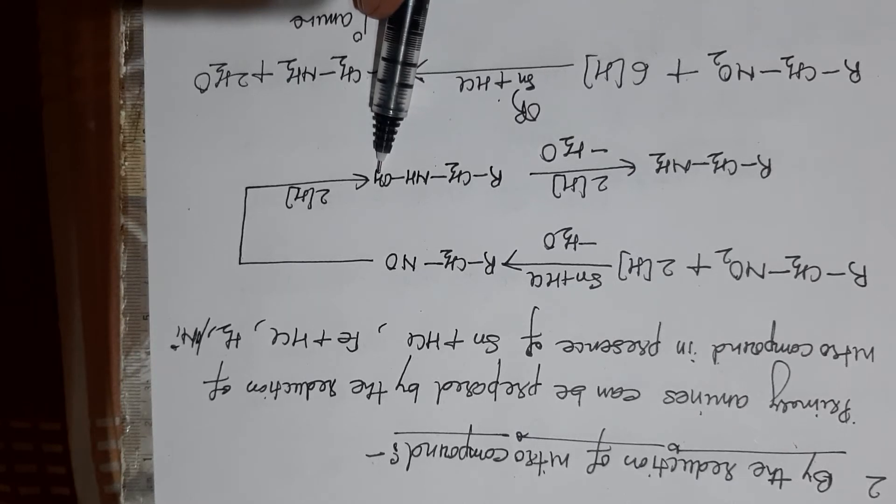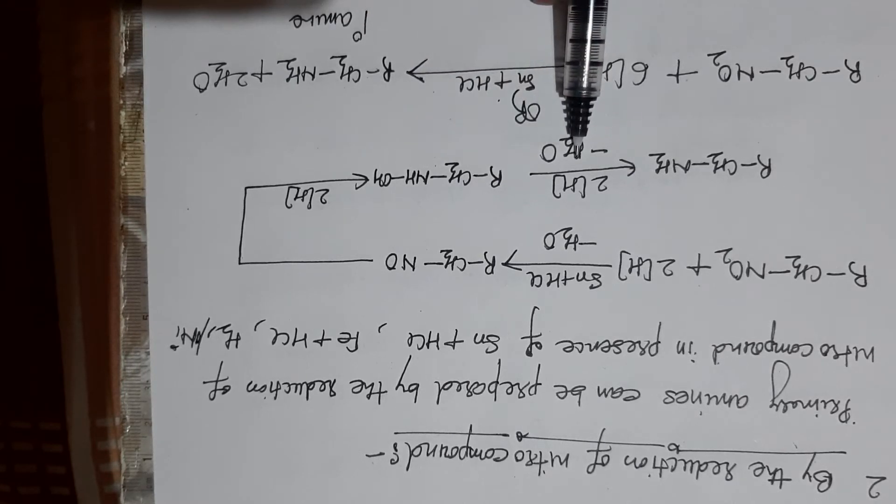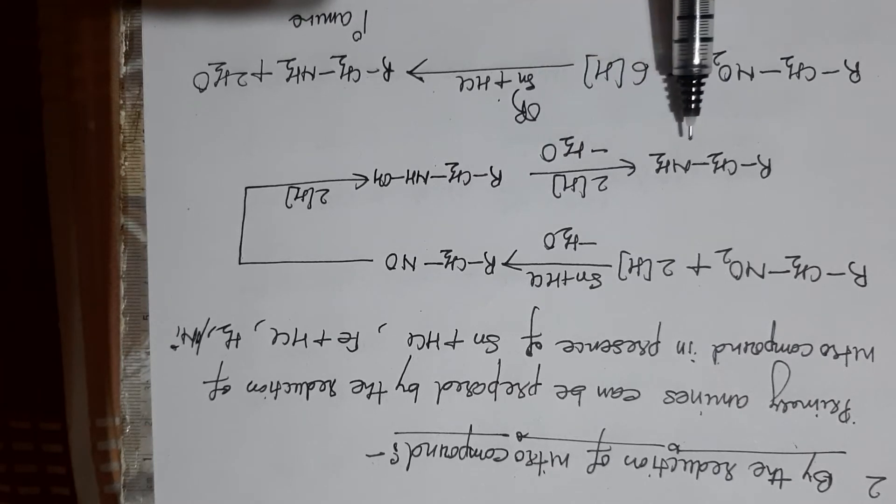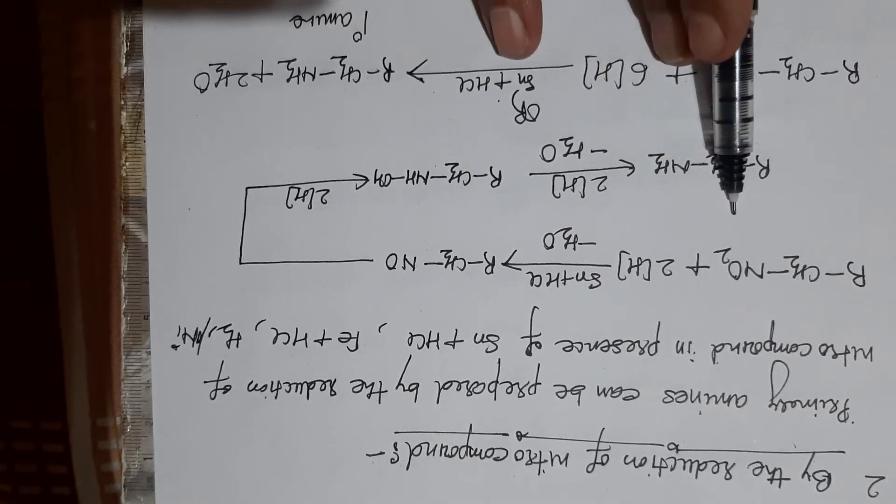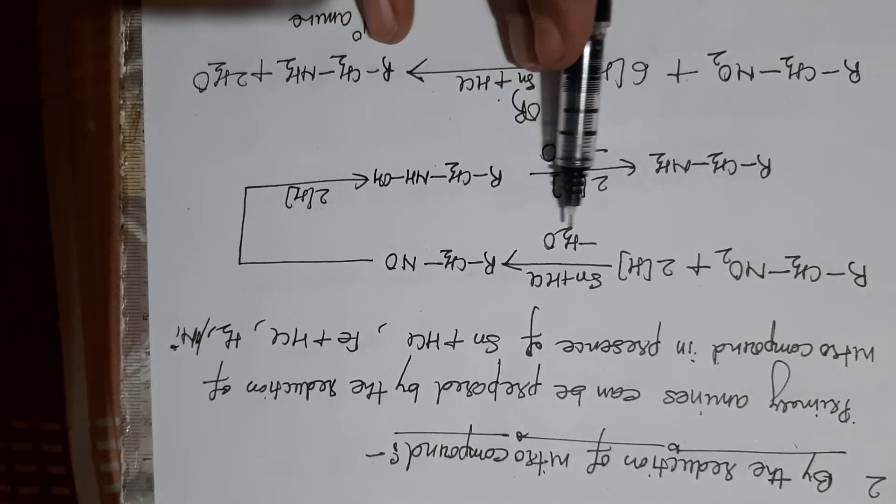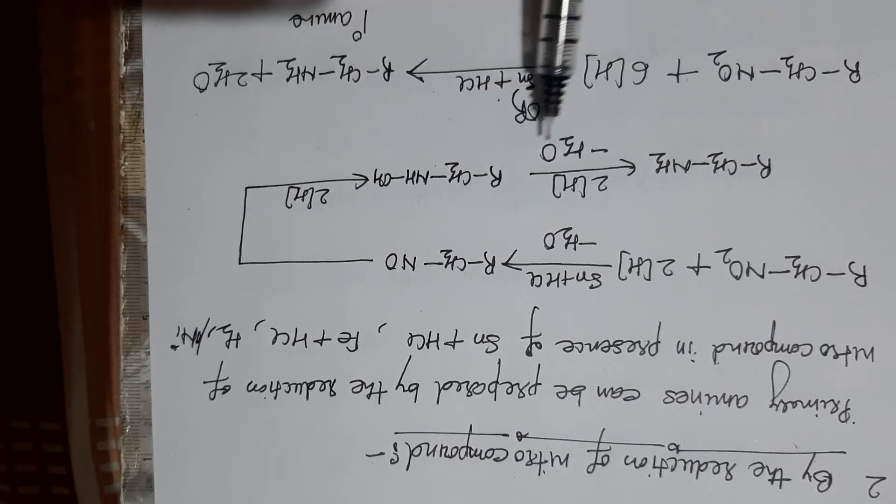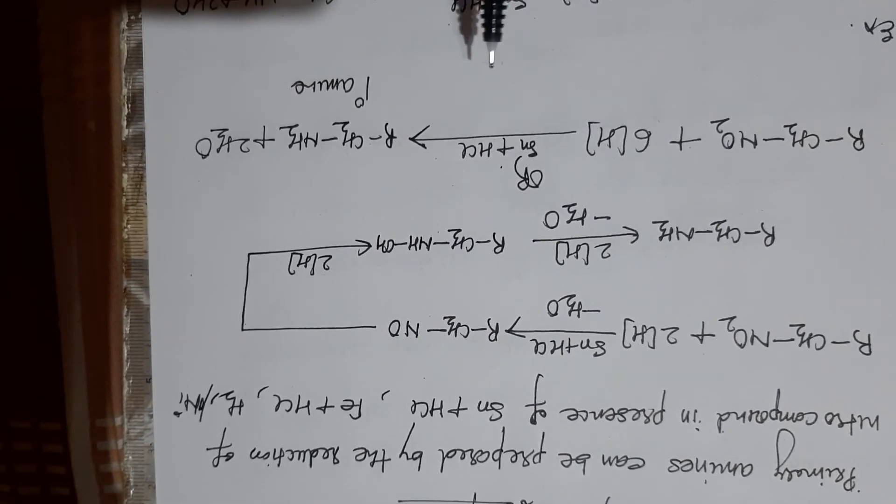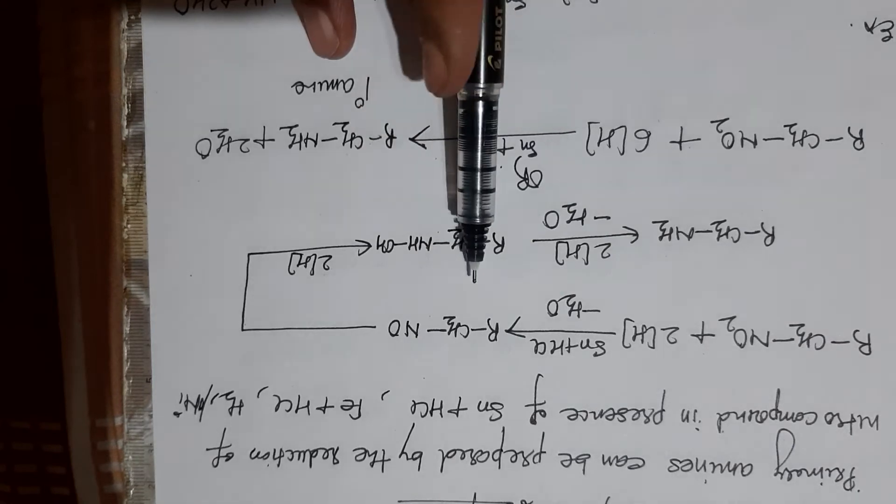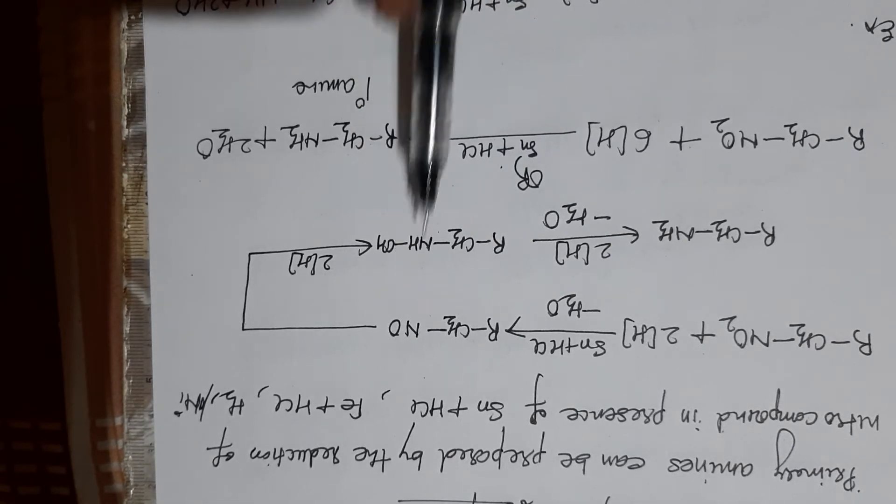Finally, on again reduction, that means total six hydrogens we have to use, so you will get primary amine. You can write this reaction stepwise by two hydrogens, then two hydrogens, and again two hydrogens, or you can write it in a single reaction.